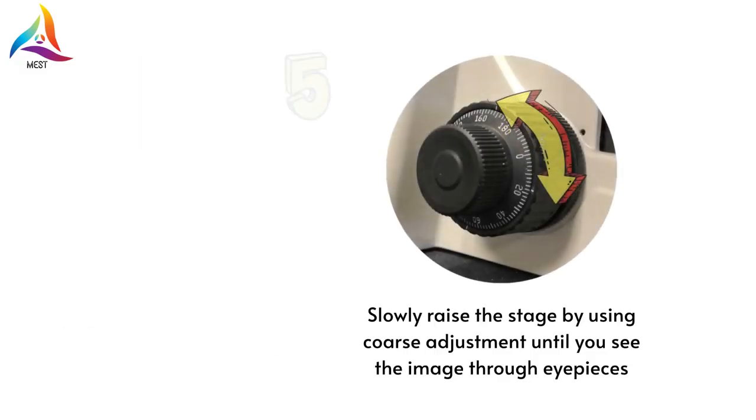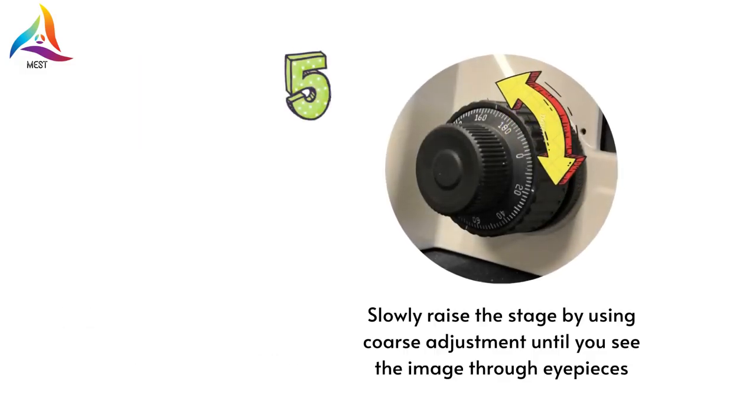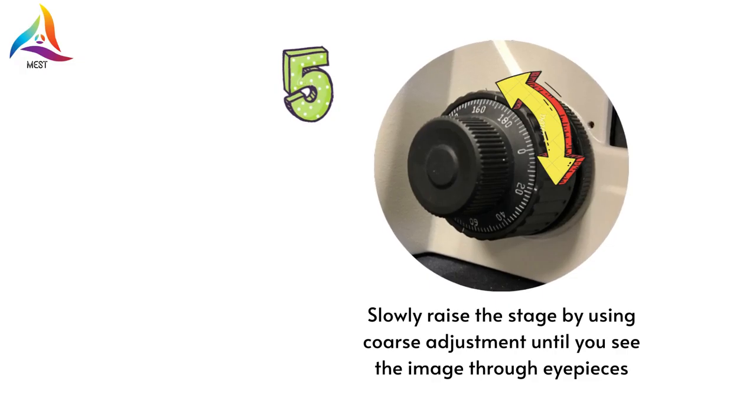As the fifth step, the stage can be moved slowly up and down by rotating the coarse adjustment knob until you can see the image through the eyepieces.